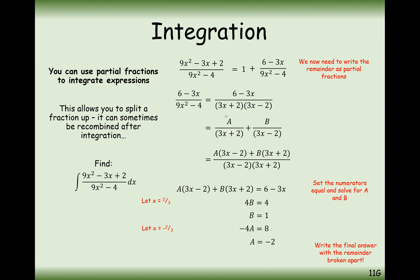Substituting that into the equation gives A equals minus 2. So A is minus 2 and B is 1. The expression is going to be 1 from the initial term, minus 2 over (3x plus 2), plus 1 over (3x minus 2).